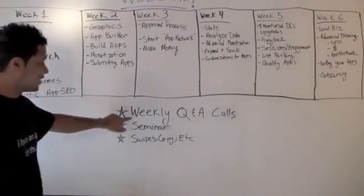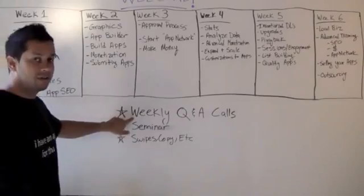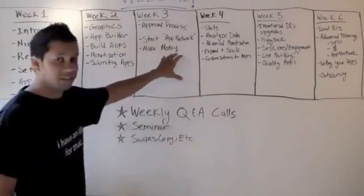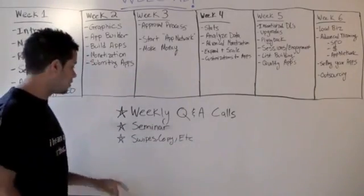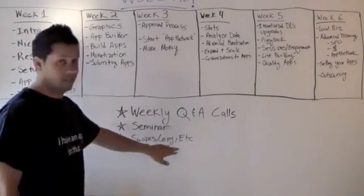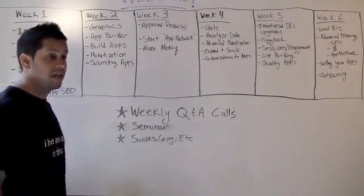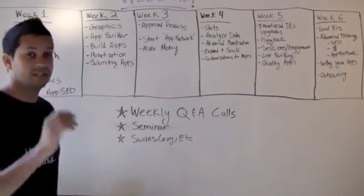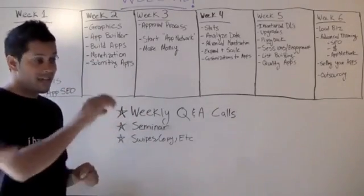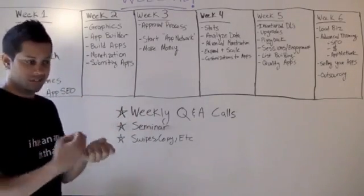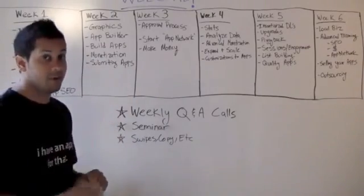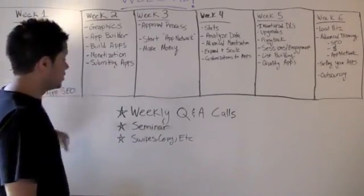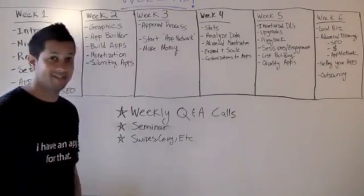Also included are weekly Q&A calls — every week we'll have a call and you'll get emails and updates about it. You're also going to get more information about the upcoming seminar around week three or four. I'll give you the swipes and copy and everything you need for this whole process. One thing I forgot to mention is copywriting — it's extremely important that your app descriptions are well-written to attract people when they click and make them want to buy. So go ahead and get started on week one and I'll see you on the Q&A call later this week.